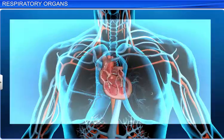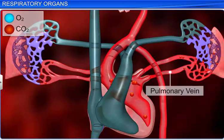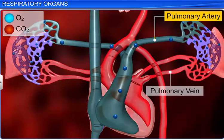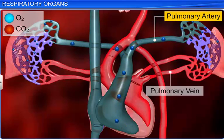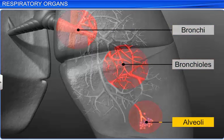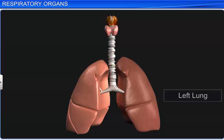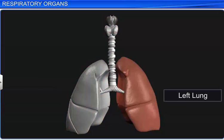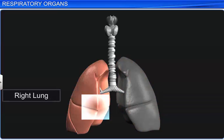The pulmonary vein carries purified blood to the heart, and from the heart, the pulmonary artery carries impure blood to the lungs. Bronchi, bronchioles, and alveoli form a part of a pair of lungs — the left lung and the right lung. The left lung has two lobes and is slightly smaller because of the location of the heart near it. The right lung is bigger, with three lobes.